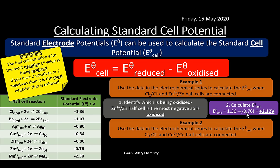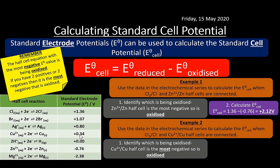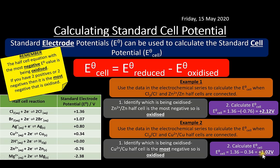Second example: Cl₂/Cl⁻ (E° = +1.36 V) connected to Cu²⁺/Cu (E° = +0.34 V). Both are positive, so the most negative — copper — is oxidized. E°cell = 1.36 − 0.34 = +1.02 V.